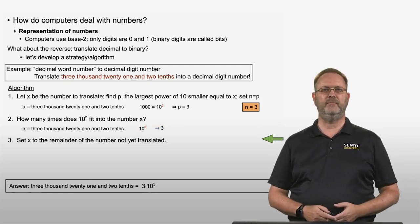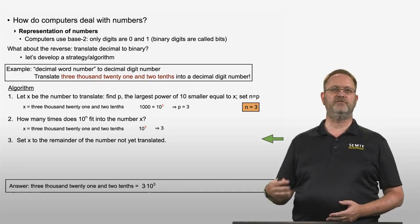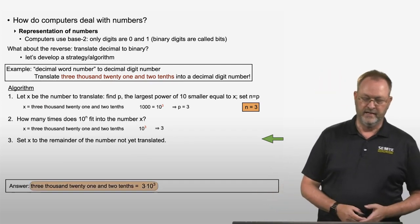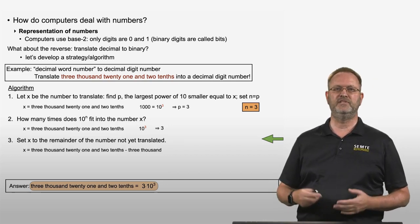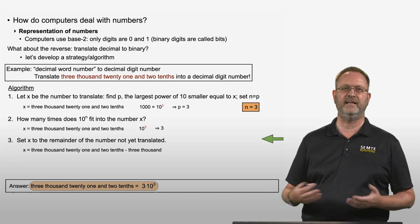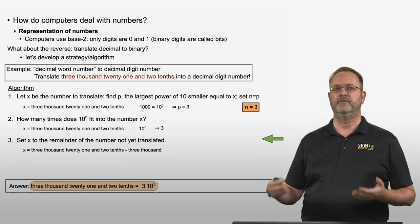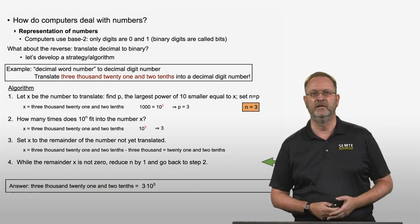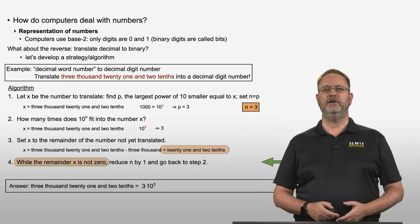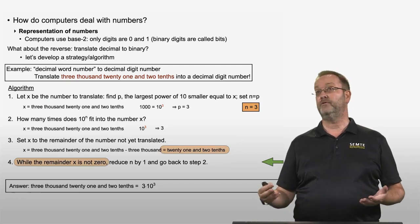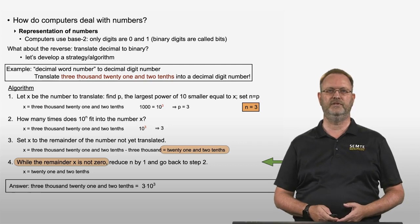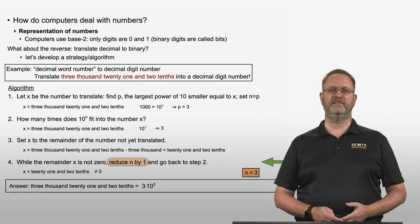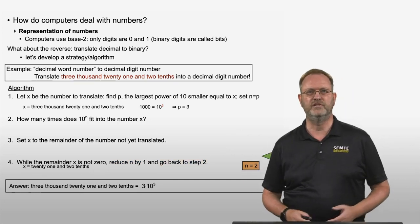That's not the entire number, so step 3 is to set x to the remainder not yet translated. We have 3,021 and 2 tenths minus 3,000, which is 21 and 2 tenths. Step 4: if the remainder is not yet 0, we reduce n by 1 and go back to step 2. Our remainder is 21 and 2 tenths — not zero — so we reduce n from 3 to 2 and go back to step 2.